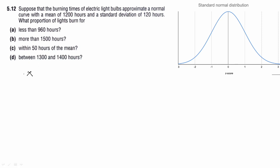The last question is between 1300 and 1400 hours. So x is between 1300 and 1400. For z1, x minus mu over sigma equals 1300 minus 1200 over 120. For z2, it's 1400 minus 1200 over 120. Solving these, z1 equals 0.83 and z2 equals 1.66. Let's plot it.